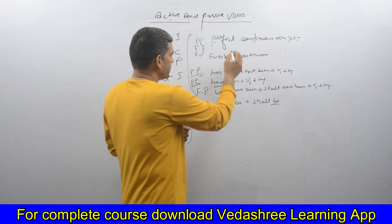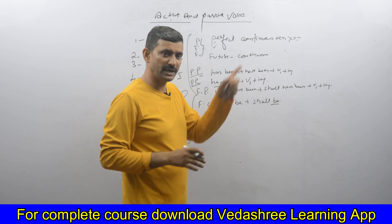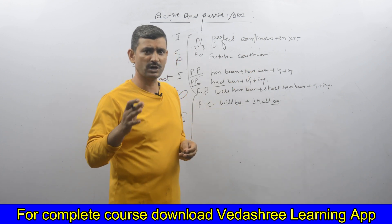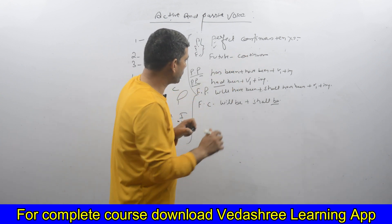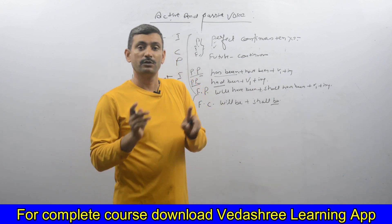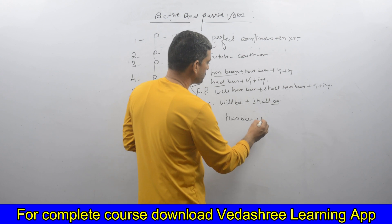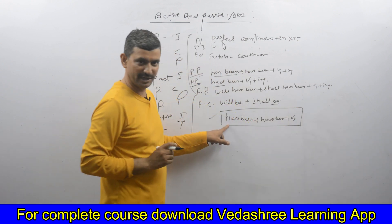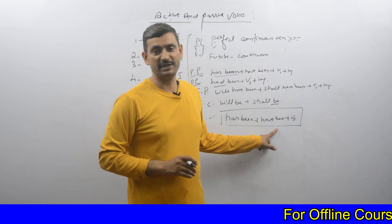Now the important point is that when we take the third form of the verb and transfer from active to passive voice — for example, present perfect tense — what we must add is 'has been / have been + V3 (third form of the verb).' That is when our sentence becomes passive form.